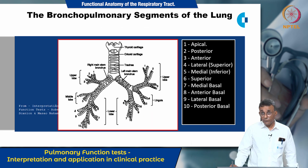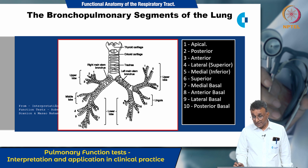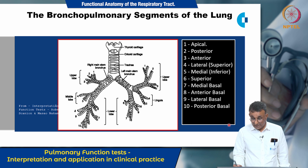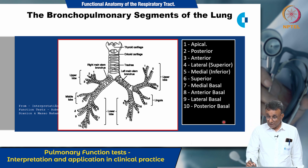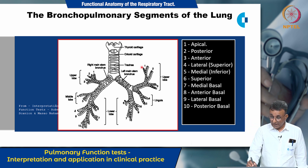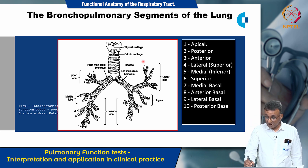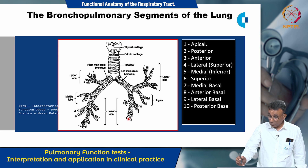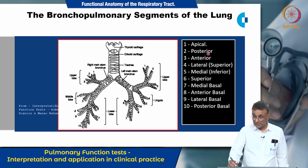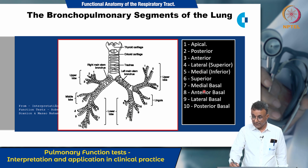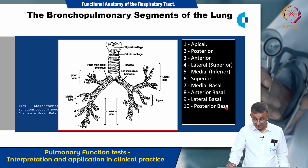This is a clearer view of the bronchopulmonary segments, represented by numbers 1 to 10, corresponding to the apical, posterior, anterior, lateral, medial, medial basal, anterior basal, lateral basal, and posterior basal bronchopulmonary segments.